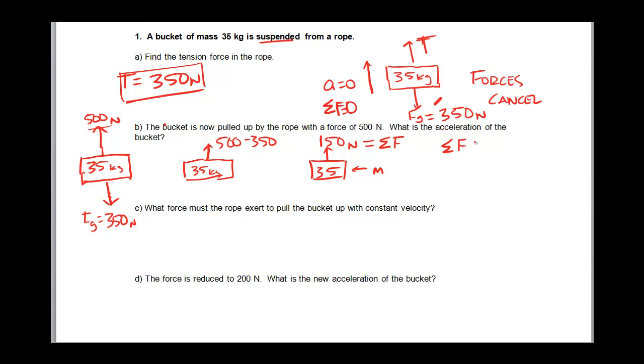So if I want the acceleration, net force is mass times acceleration. So 150 newtons is equal to 35 kilograms times the acceleration. The acceleration comes out to be, well, we need to divide both sides by 35. And the acceleration comes out to be 150 divided by 35. So for this acceleration, we get 4.3 meters per second squared.